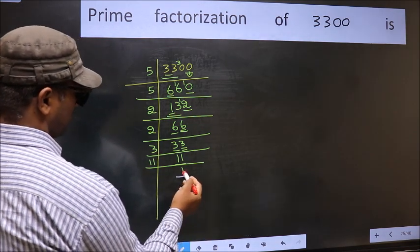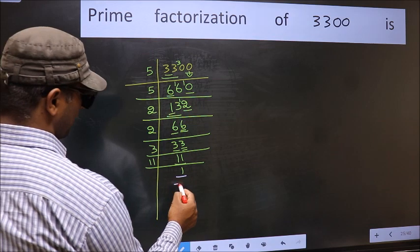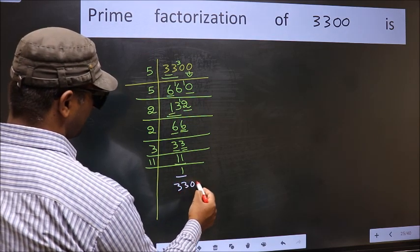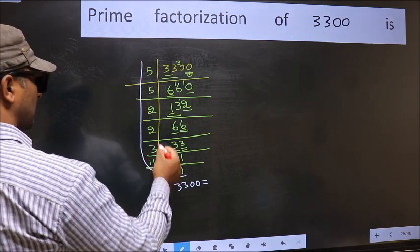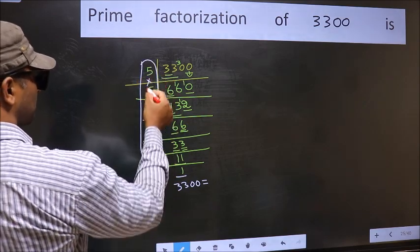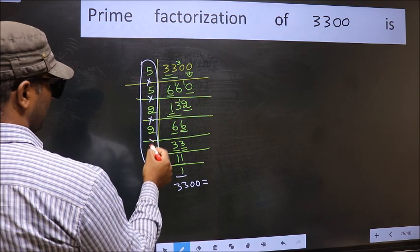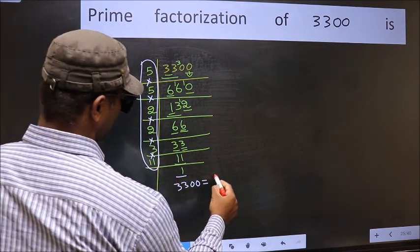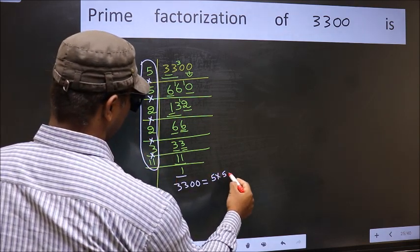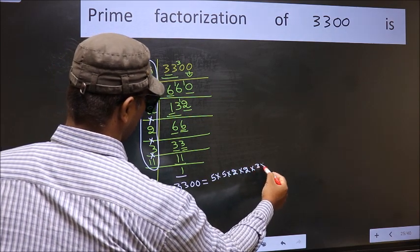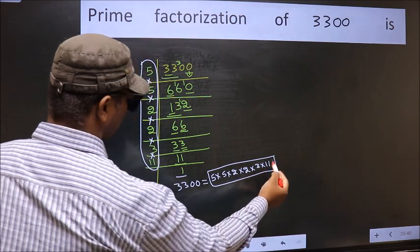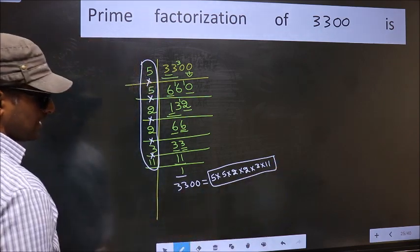So we got 1 here. So the prime factorization of 3300 is the product of these numbers. That is 5 into 5 into 2 into 2 into 3 into 3 into 11. This is the prime factorization of 3300.